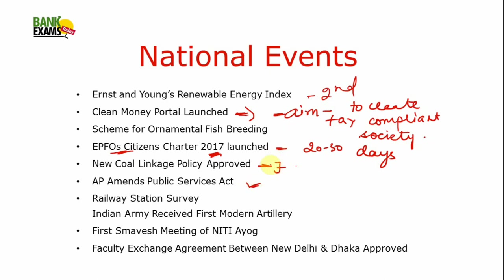The Andhra Pradesh government passed a bill to appoint P.V. Sindhu, an Olympic silver medalist, as a Group 1 officer. The reason for amending the act was that the AP Public Services Act mentioned no badminton player could be included in Group 1 officers. So the government amended its services act to allow P.V. Sindhu to be appointed as a Group 1 officer.